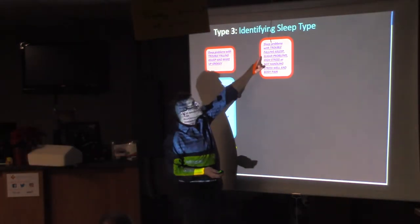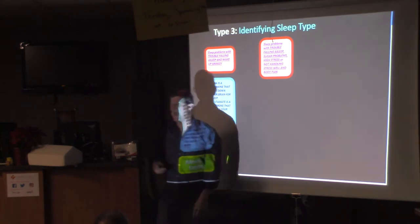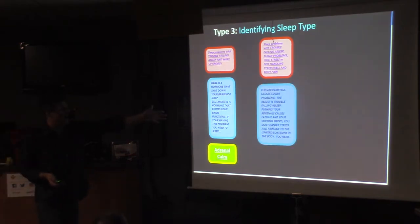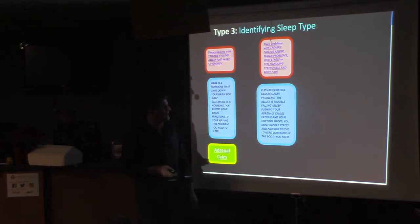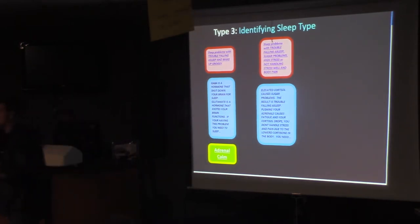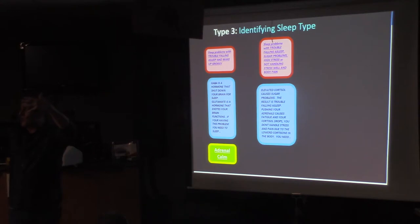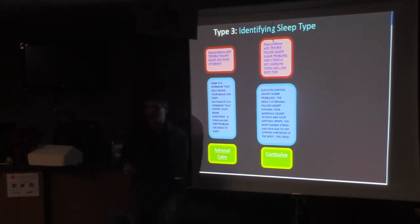We've got to make sure GABA shuts down your brain. Glutamate is a hormone that excites the brain function. If you're having problems to help you sleep, you need adrenal calm. That will stimulate the reproduction of GABA and help you fall asleep. Dr. Ray, I have sleep problems, trouble falling asleep, I have sugar problems. Typically, high sugar, insulin-resistant patients have trouble falling asleep because of the sugar problems. High stress and I'm in pain. I don't like stress, man. Stress gets to me and I start flipping out, and I get body pain. Elevated cortisol causes sugar problems. The trouble is falling asleep. Pushing your adrenals causes fatigue. Cortisol drops, and you don't handle stress due to the pain, due to the lowered cortisol. Cortisol is cortisone. What's cortisone? It's an anti-inflammatory.